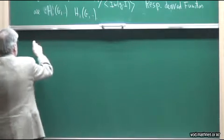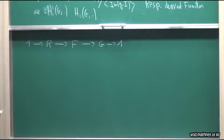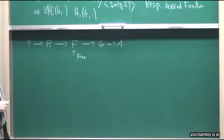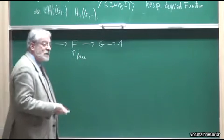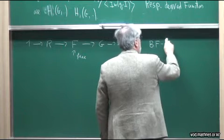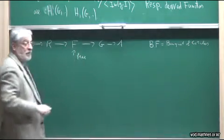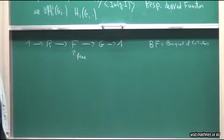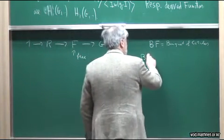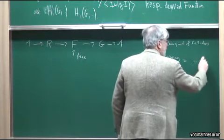I want to explain Hopf's theory. We have 1 → R → F → G, and BF where F is free. The classifying space BF is a bouquet of circles. Now R is a subgroup of F, and a subgroup corresponds to a covering space, which is again a bouquet of circles.